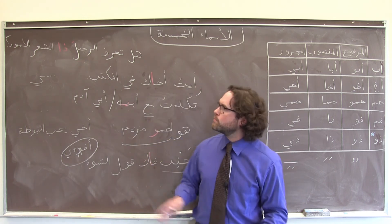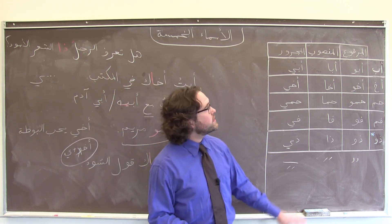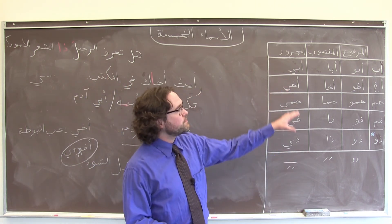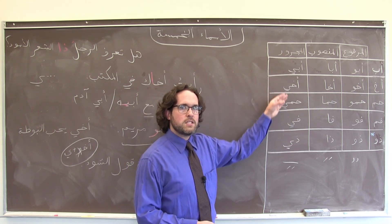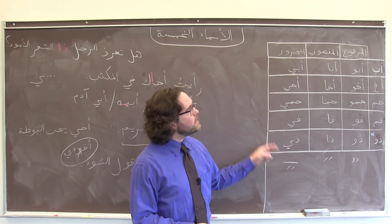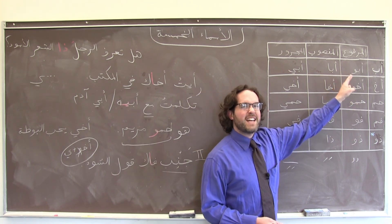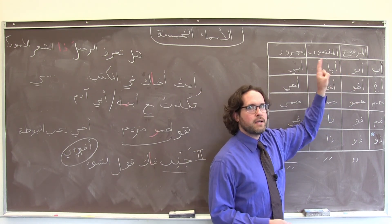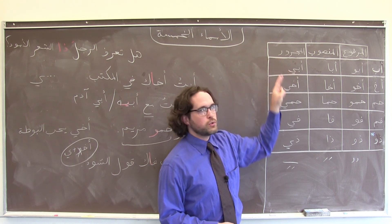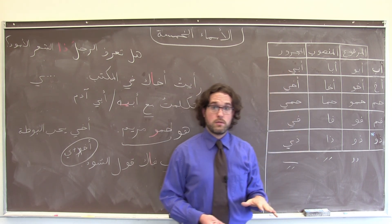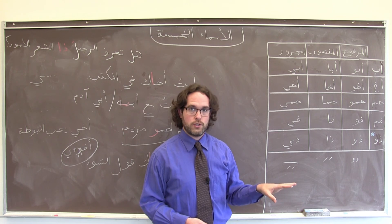The important thing for now is to recognize ذو when you see it, and to know that it is one of these five names, all of which function in the same regular pattern. If you need a refresher on when exactly a noun is going to be مرفوع, منصوب, or مجرور, we have separate videos on all of those case endings that you can go back and watch. Thank you very much.